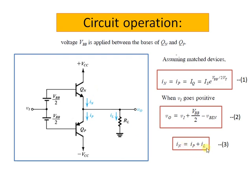IN is equal to IP plus IL because of applying KCL to this particular node. So when IL increases, IN also will increase as per equation number 3. This increase in IN will be accompanied by the corresponding increase in VBEN, and since the voltage between the two bases remains constant at VBB, the increase in VBEN will result in equal decrease in VBEP, and hence the current IP also decreases.